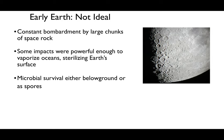There was constant bombardment of large chunks of space rocks—asteroids, comets, sometimes even small planetoids. Some of the impacts were powerful enough to vaporize oceans, sterilizing Earth's surface. If you were a microbe living on a planet with constant bombardment, you had to survive below ground or potentially as a spore or endospore.